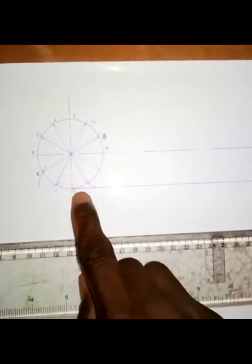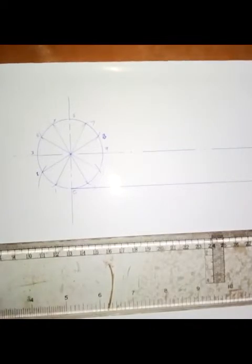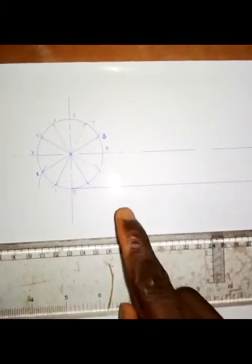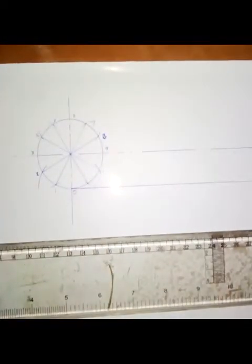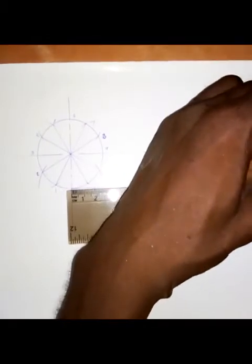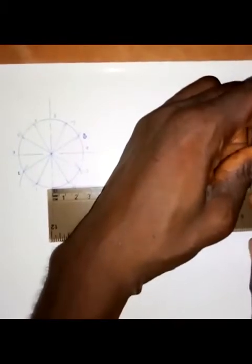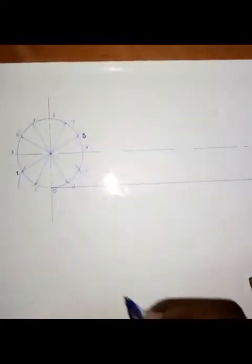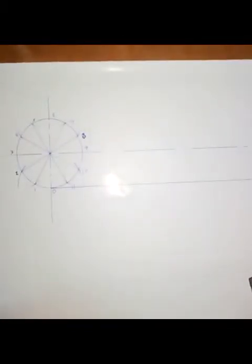We divide that distance into 12 equal parts, as we have divided the circle into 12 equal parts. The diameter is 50 mm and the circumference is calculated with the formula π×d, so π is 3.142 times 50, which gives us approximately 157 mm. I will take 157 mm on this line. I will call this point zero prime.